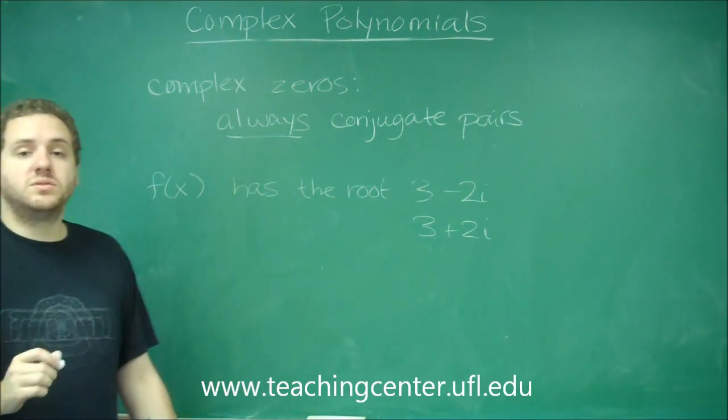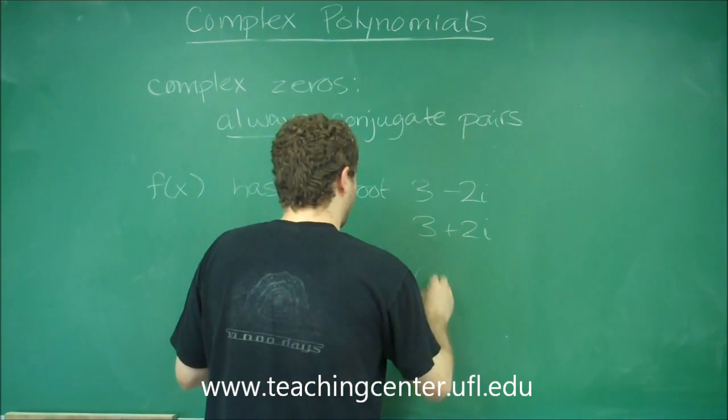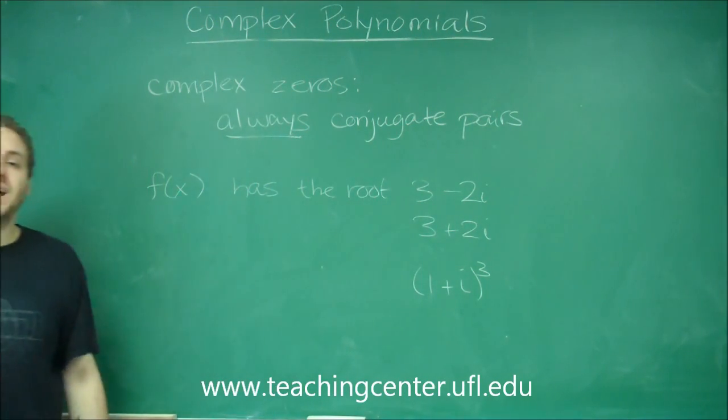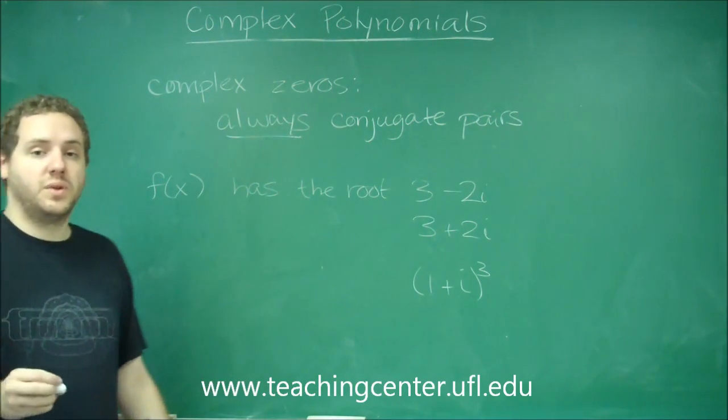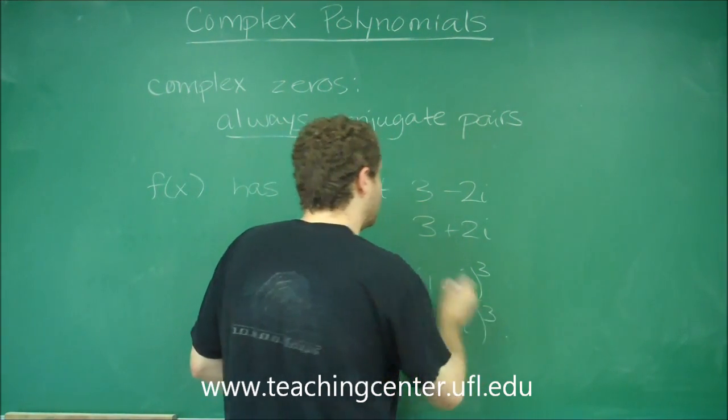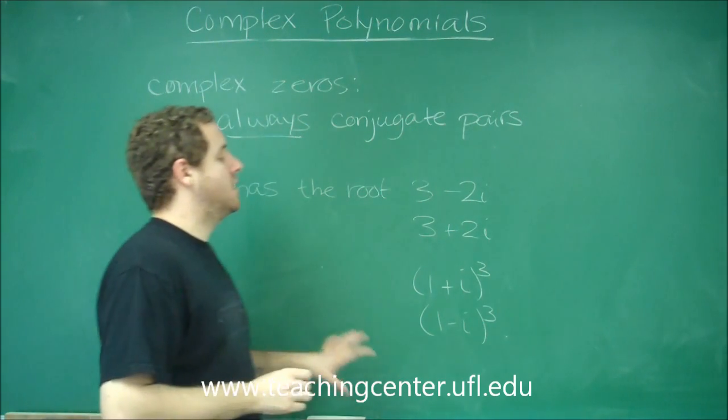That also goes with multiplicity. So if you had the root 1 plus i to the third, so you had the root 1 plus i three times with multiplicity 3, you would have to have 1 minus i with multiplicity 3 also.